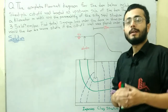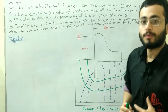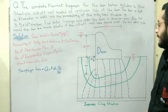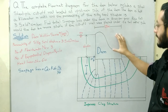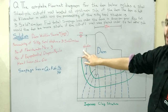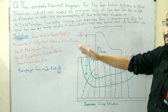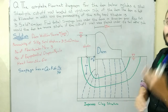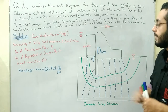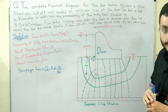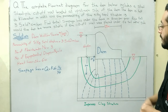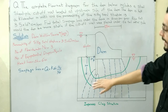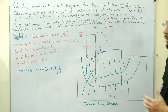Let us start by writing the data and solving the numerical with the help of our equation. Looking at the complete flow net diagram, we can see the dam and that Δh equals 6 meters. Delta h is the difference in head between the upstream and downstream sides — essentially the head loss. The green lines are flow lines and the blue dashed lines are equipotential lines.